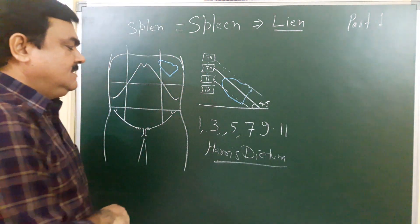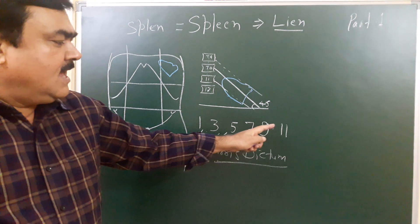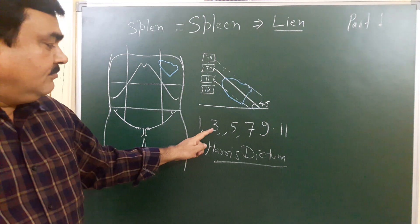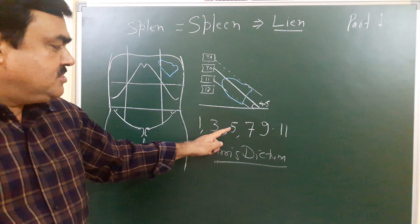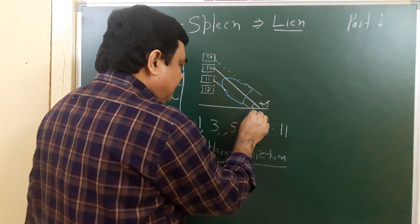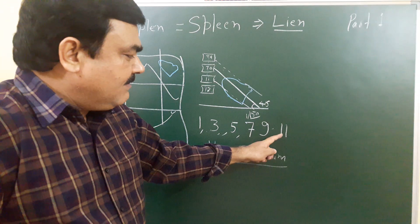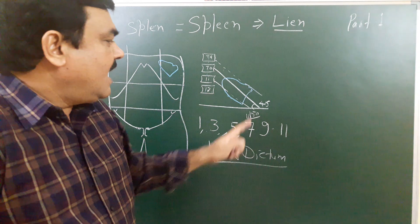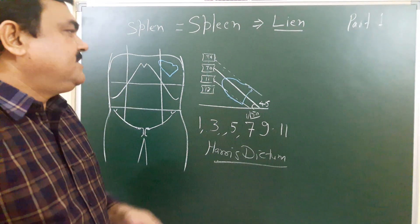Harris dictum consists of odd numbers for the spleen: 1, 3, 5, 7, 9, and 11. That is: 1 inch thickness, 3 inches width, 5 inches length, 7 oz in weight (approximately 150 grams), and it is related with the 9th to 11th ribs. Its long axis lies along the 10th rib.